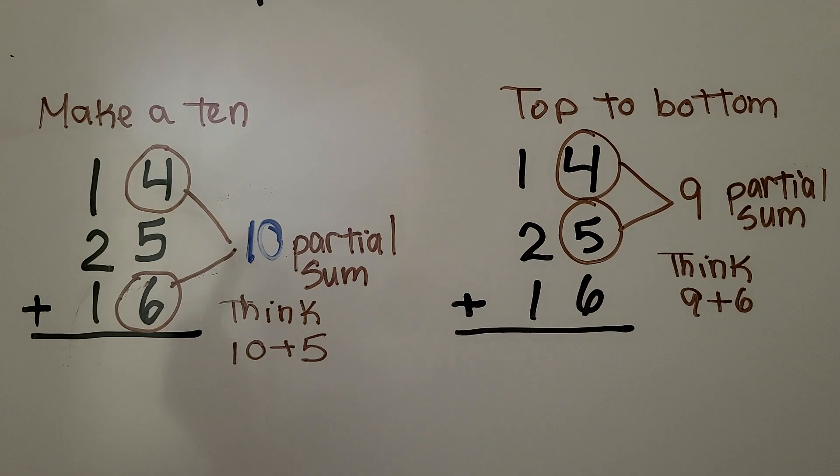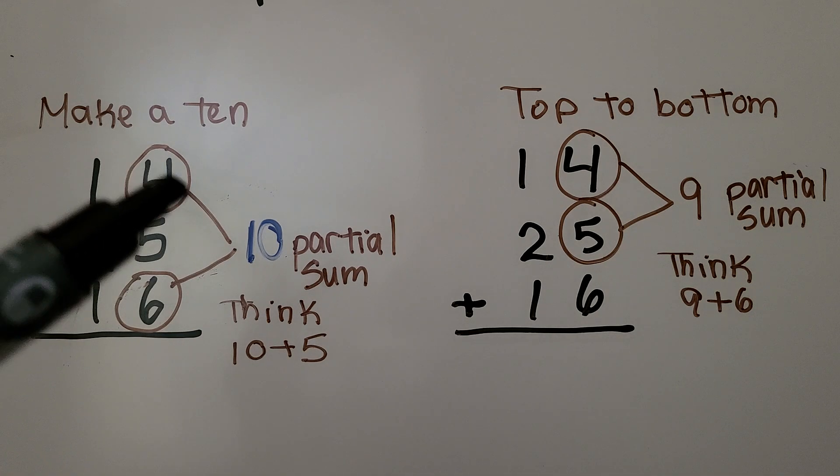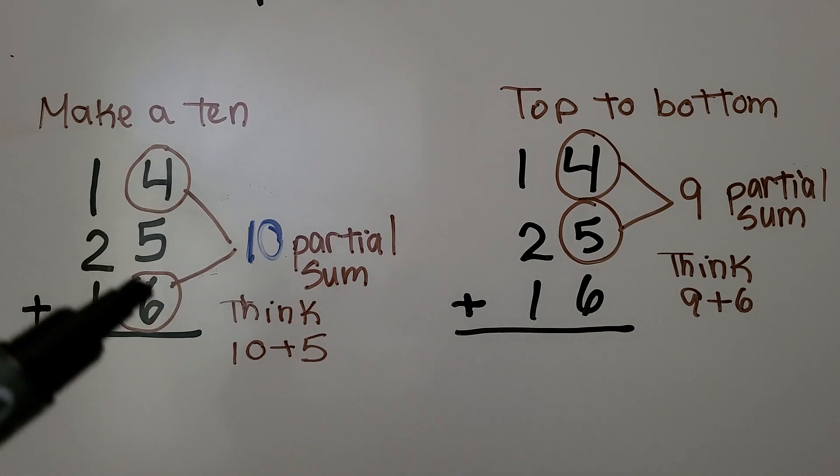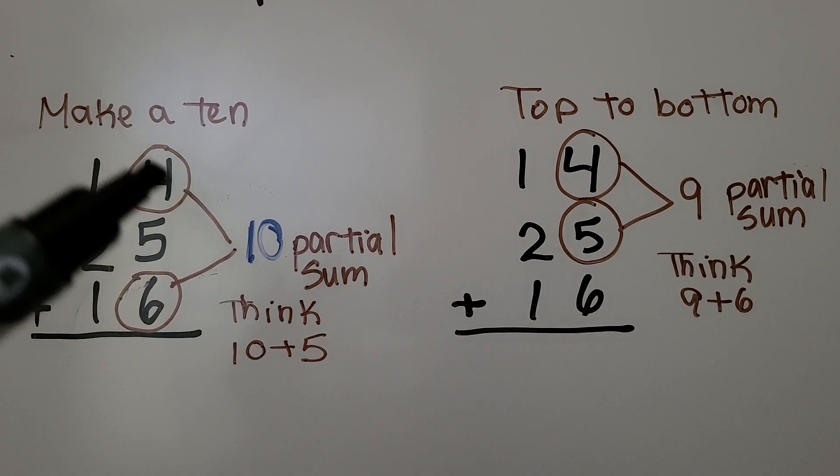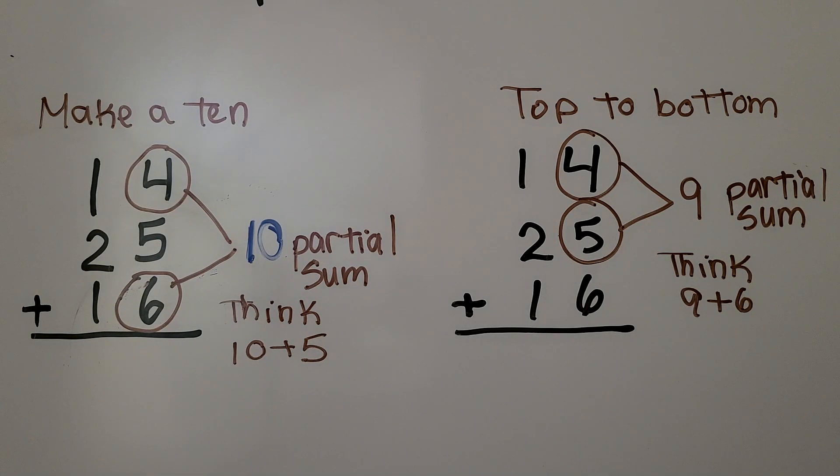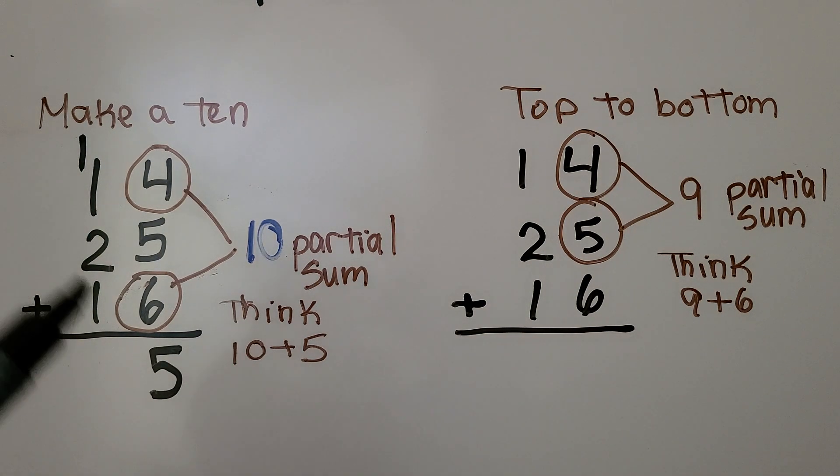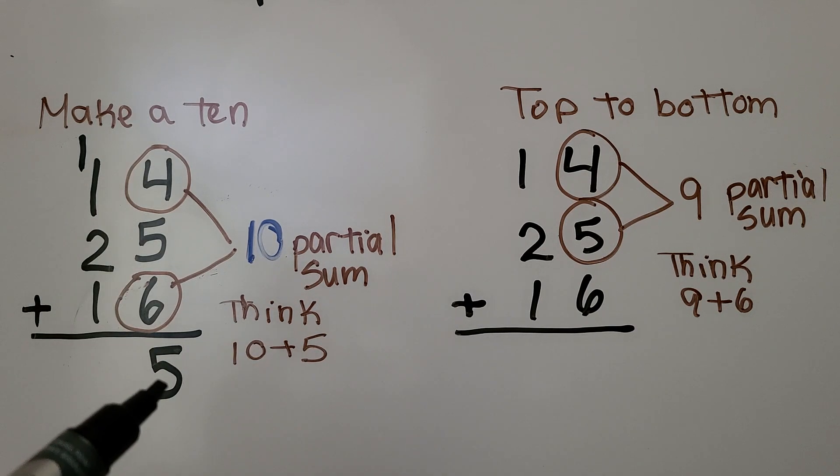Here we have 14 plus 25 plus 16. We can make a 10 with the 4 and the 6. We think 10 plus 5, that's equal to 15. 15 is 1 ten, 5 ones. We regroup the 10 and write the 5 in the ones column.